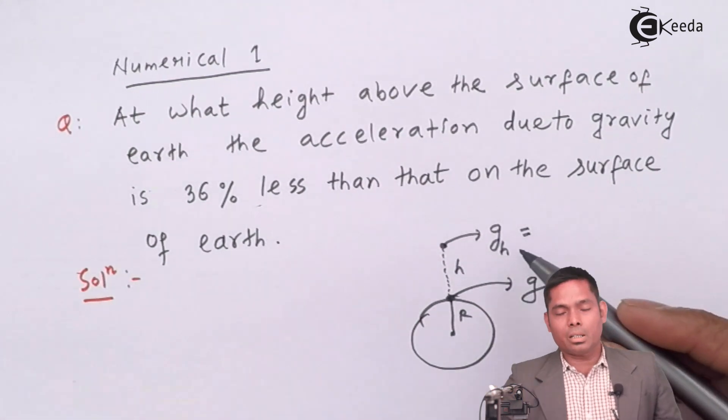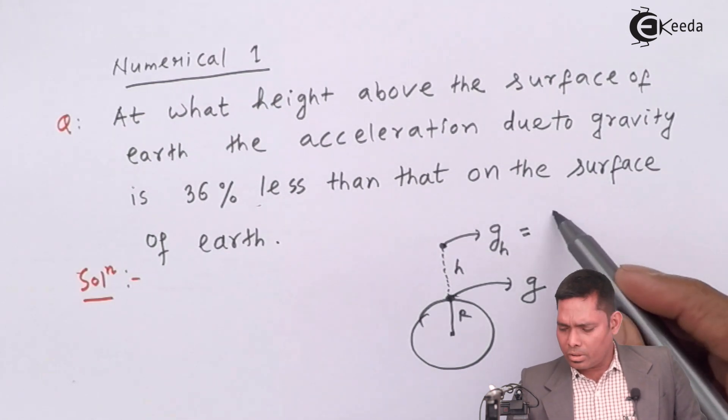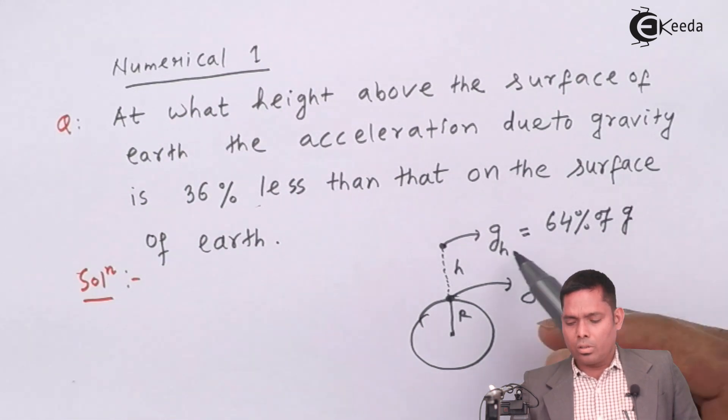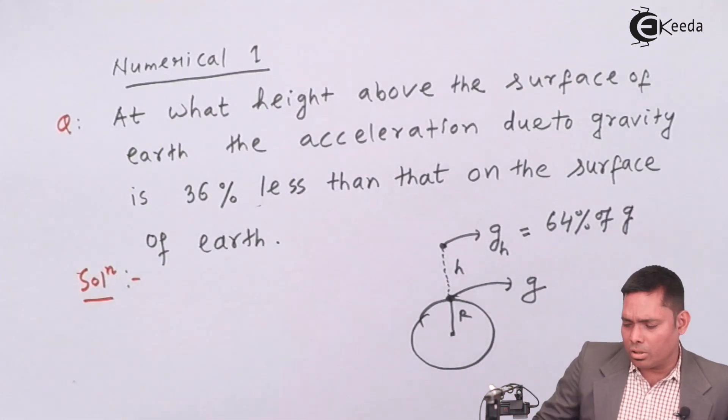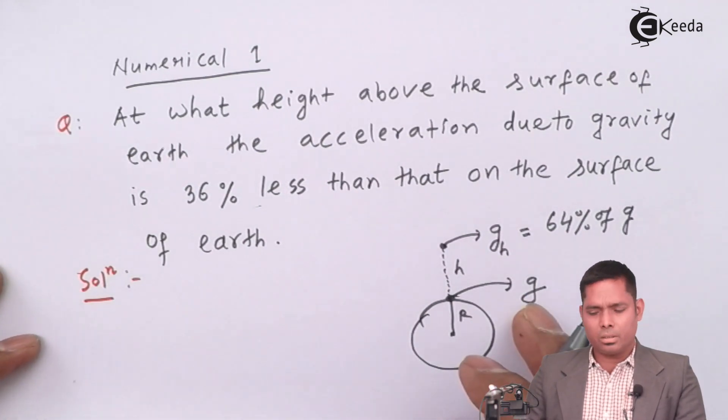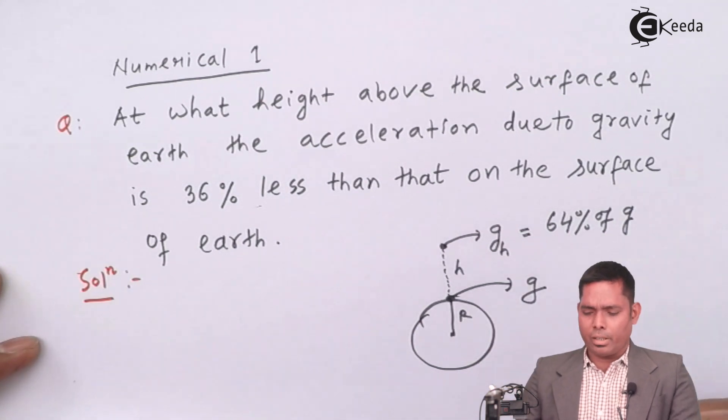On the surface of the earth, the acceleration due to gravity is g. At a height h, the value is gh. And this says that 36% less. That means what is the value at that point? It is 64%, so it is 64% of g. So we have to find the height from this relation.